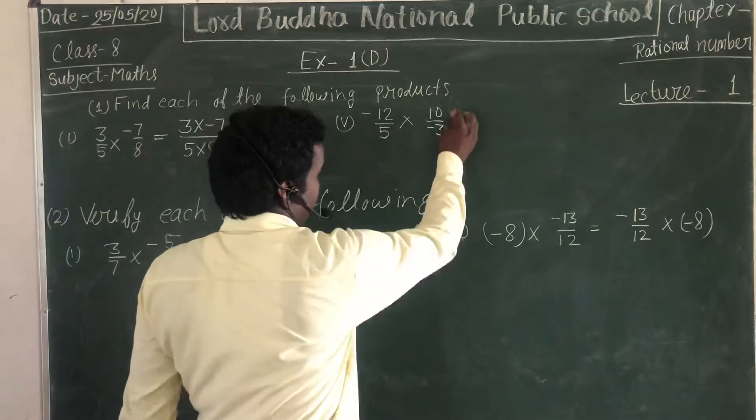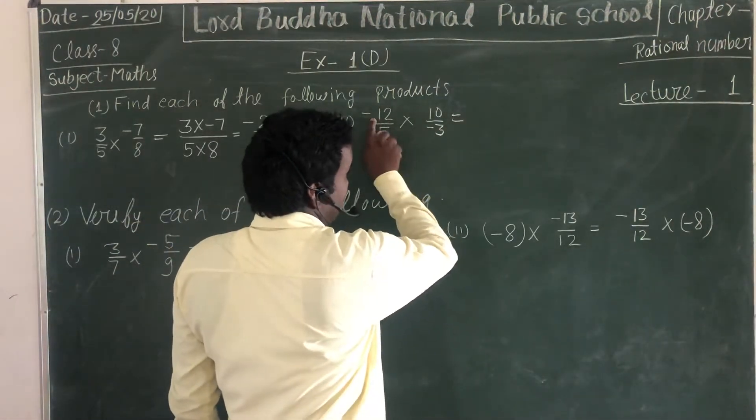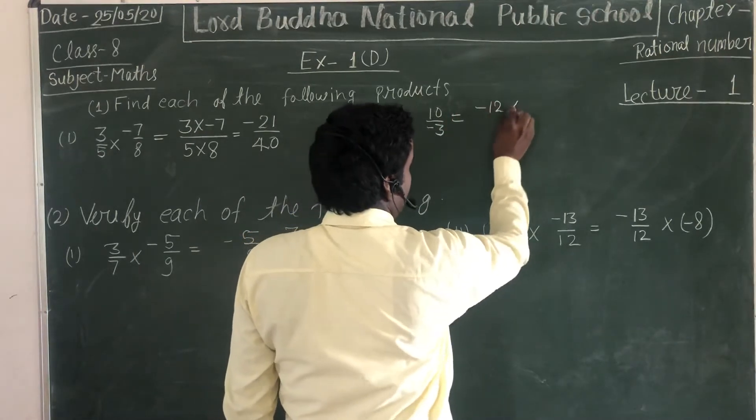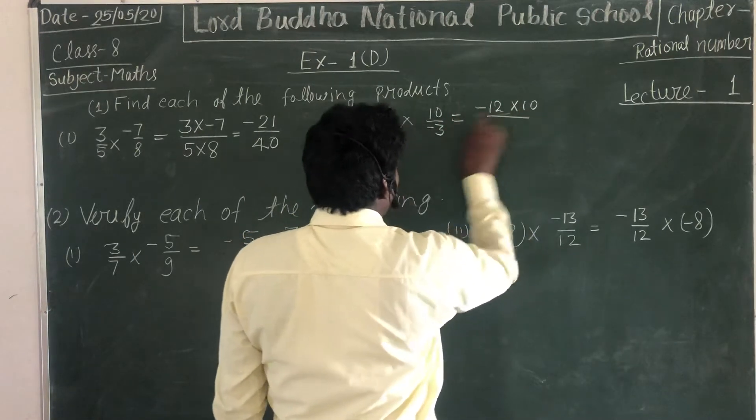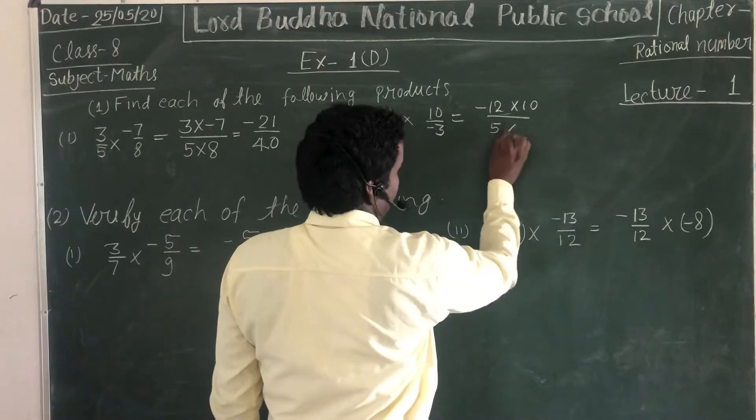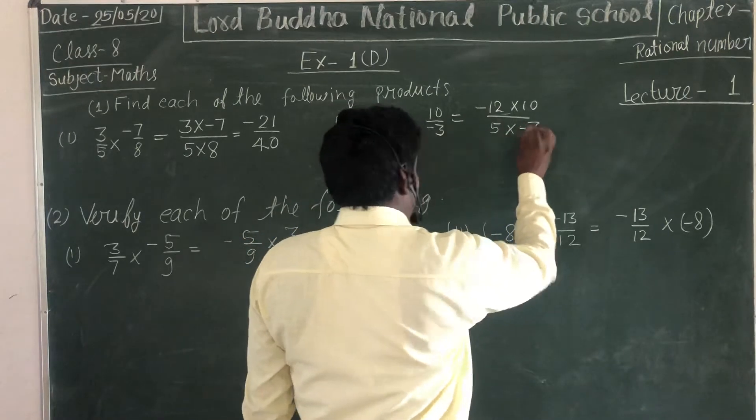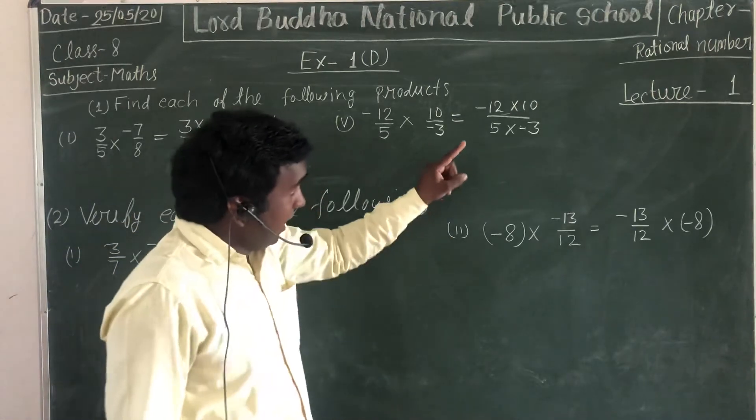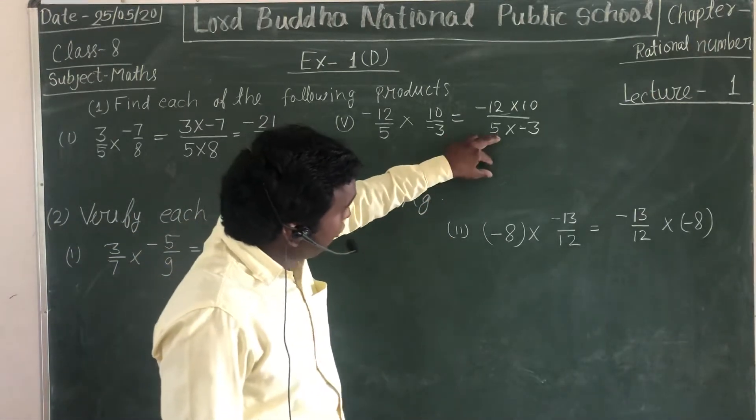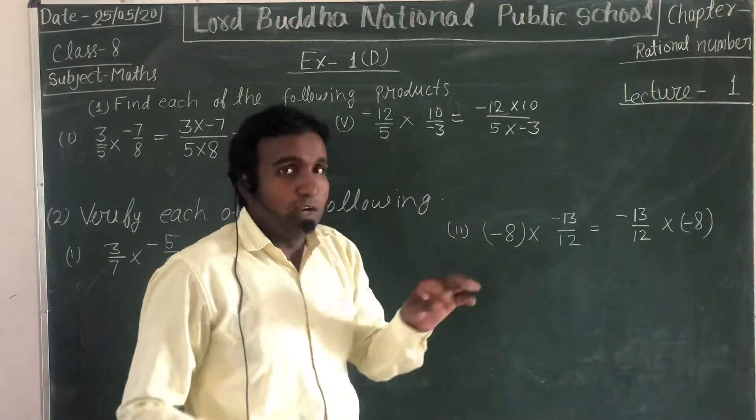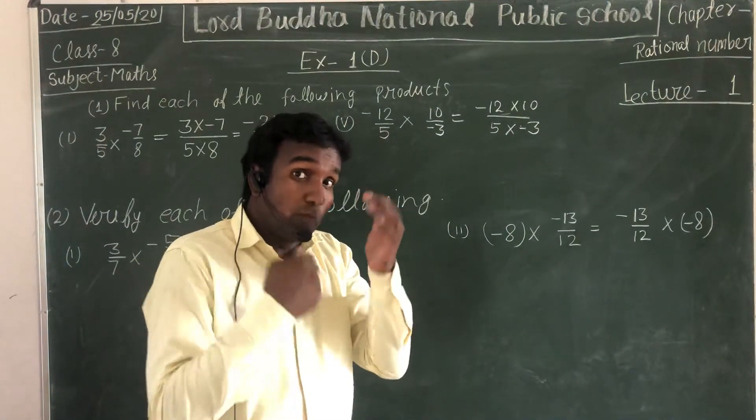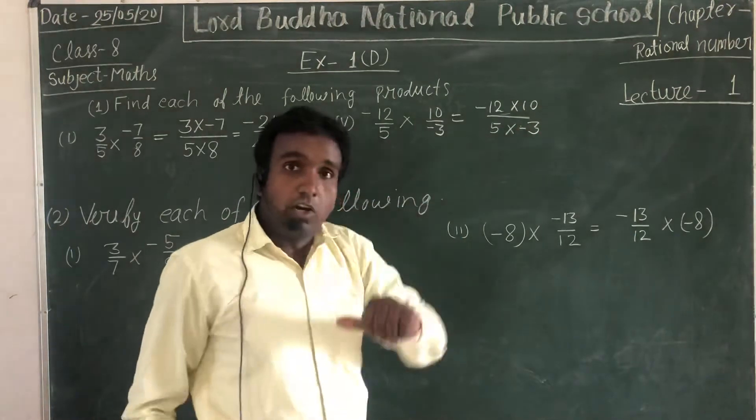Next question. The numerator is multiplied by numerator and denominator by denominator. One more step - you should find the highest common divisor of the numerator and denominator to simplify the result.